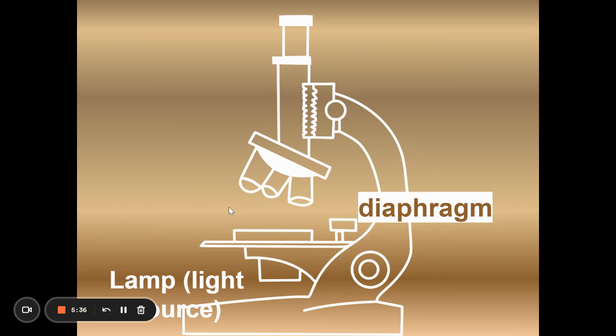Next we have the diaphragm and the lamp or the light. Now in this version, in this picture, we can see that the diaphragm is a lever. Not all of the microscopes have a diaphragm as a lever. Sometimes it's a dial under the stage. And then the light source.